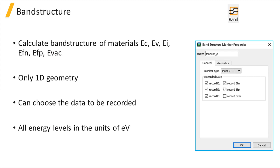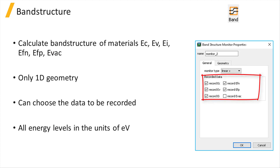The band structure monitor is a 1D monitor that calculates the band structure of materials in the areas covered by the monitor and returns the conduction, valence, intrinsic, and Fermi energy levels. The monitor could be aligned along the x, y, or z coordinates, and the user has the option to choose the data to be recorded from conduction, valence, intrinsic, electron Fermi, hole Fermi, and vacuum levels. The monitor's location and size can be adjusted under its geometry tab. All the energy levels returned by the monitor are in the units of electron volts.